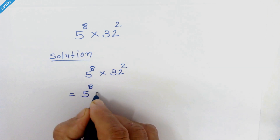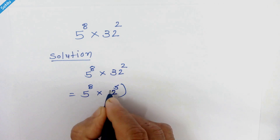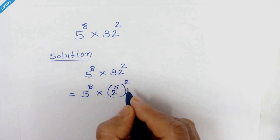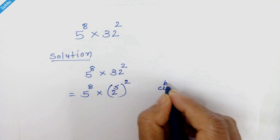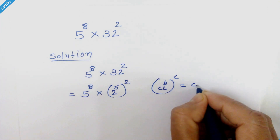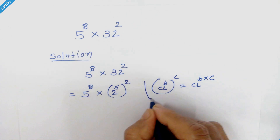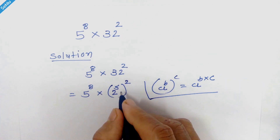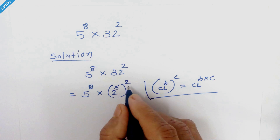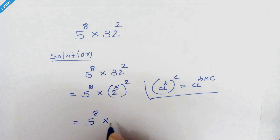So we have 5 raised to 8 times 2 raised to 5, whole square. Now if we have a raised to b, whole raised to c, then it can be written as a raised to b times c. We will apply this rule here, and this 2 can multiply. So we can write it as 5 raised to 8 times 2 raised to 10.